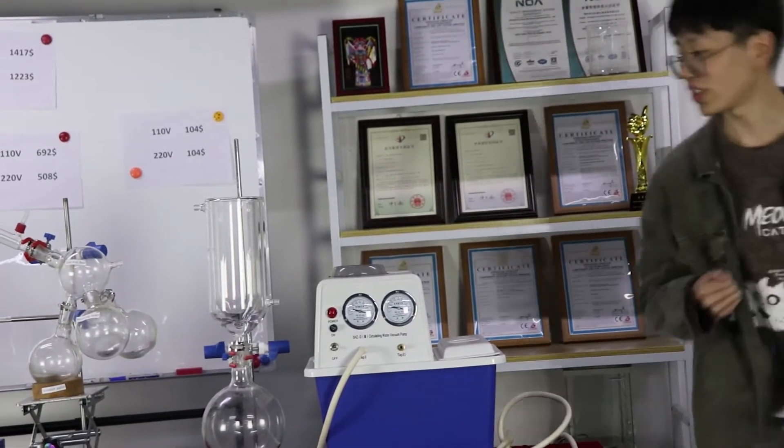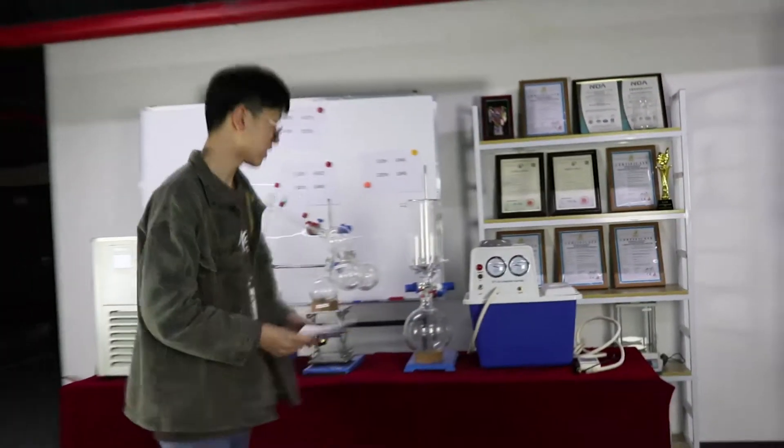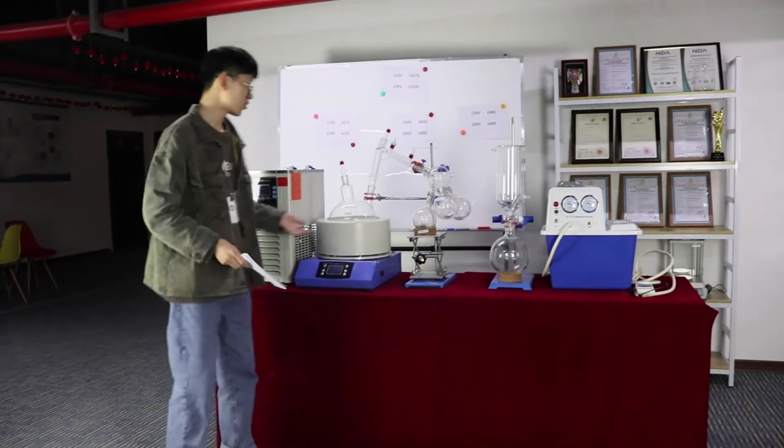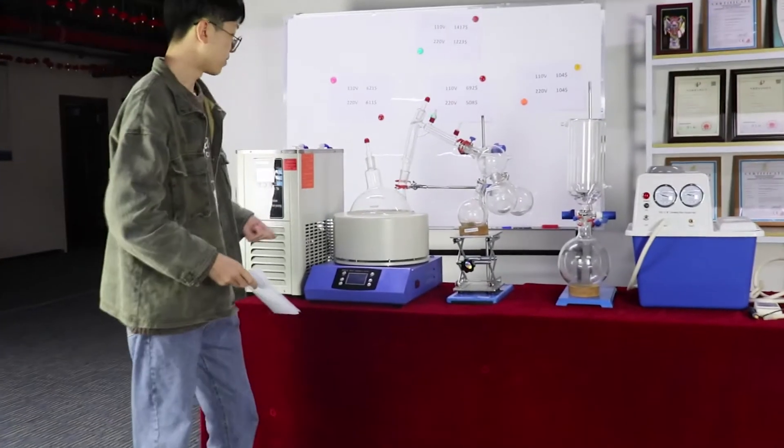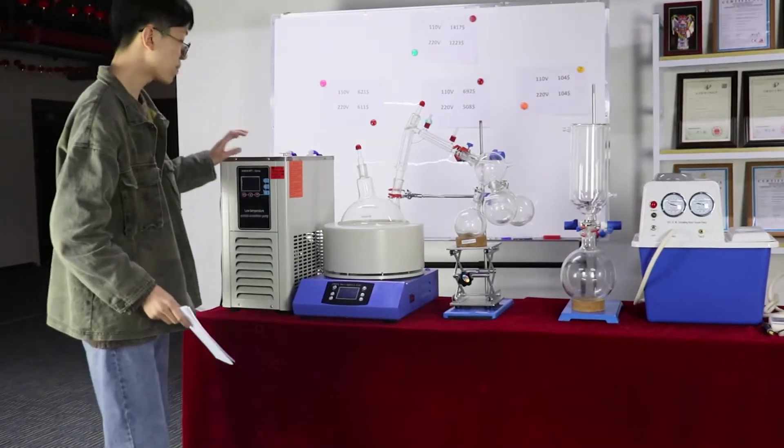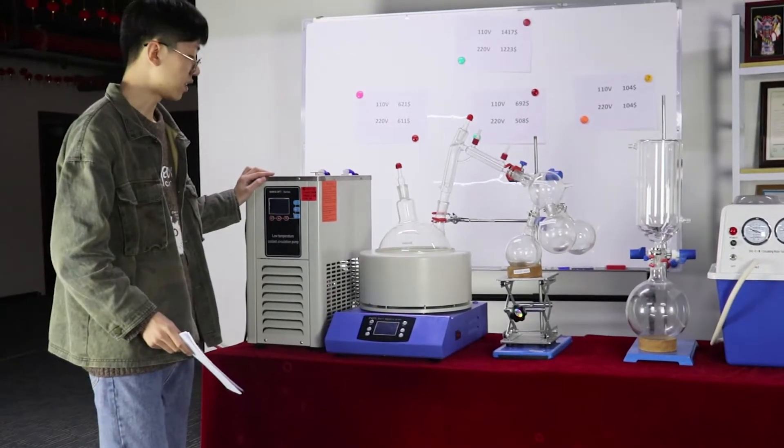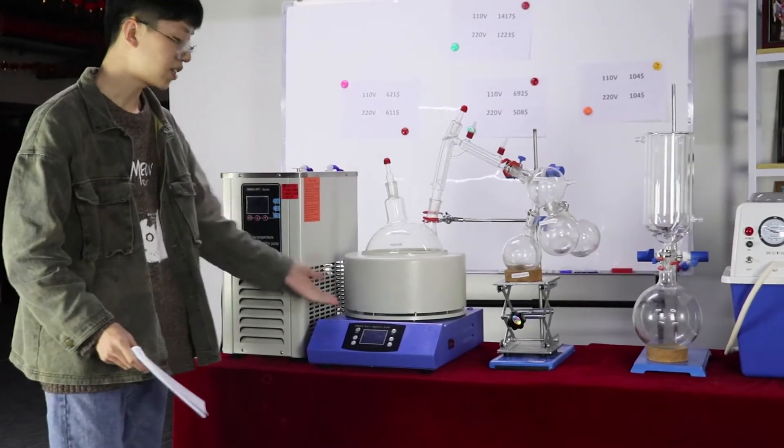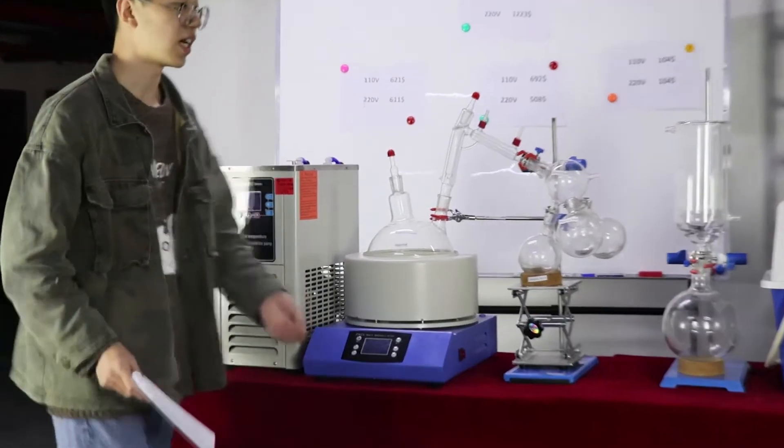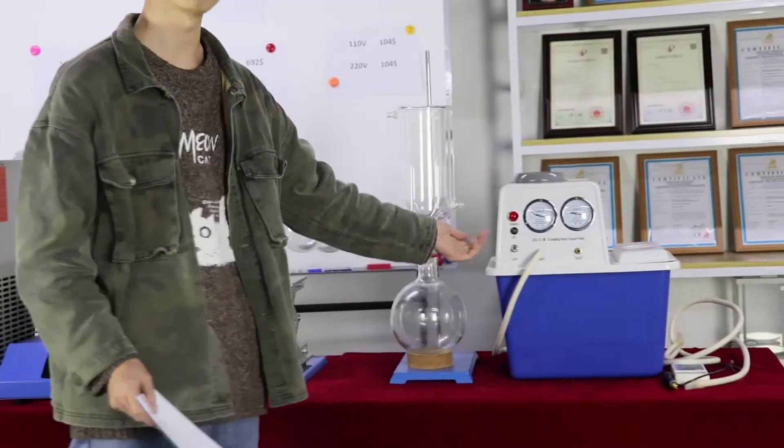Okay, as we say, this is the 5 liter short path distillation. This is my supporting devices: heating mantle, cooling chiller, and circulating water vacuum pump.